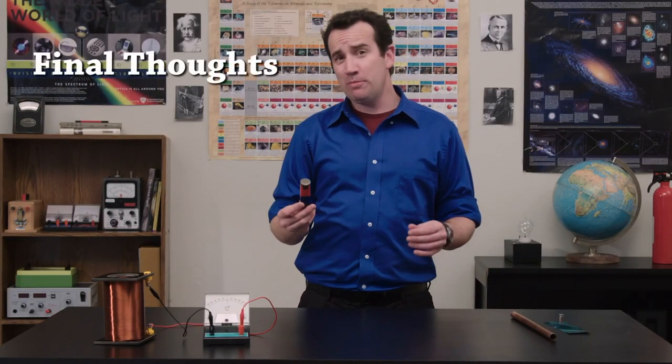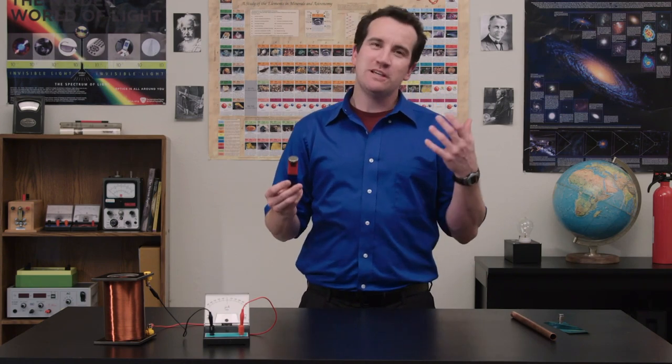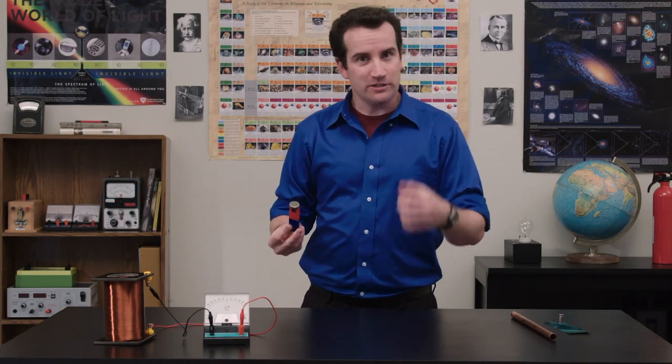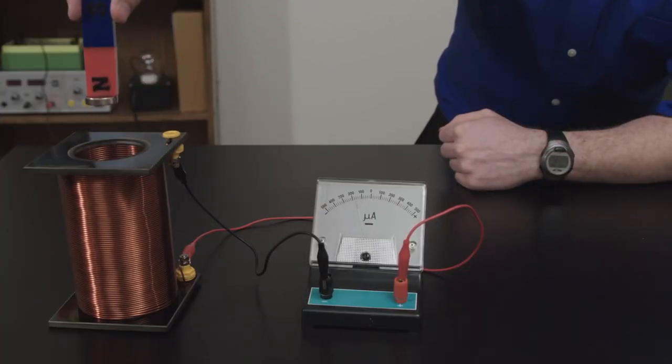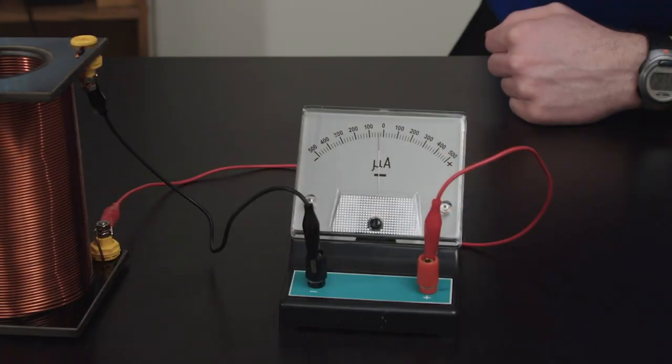Of course, the reason we need to know about electromagnetism is because it is used to generate current. For example, when I dip this magnet into this coil, it generates a few microamps which can be seen on this microammeter here.